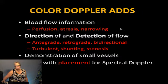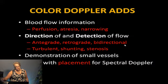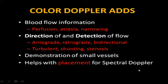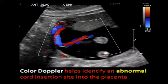What does color Doppler add? It adds blood flow information: perfusion, narrowing or stenosis, direction and detection of flow — antegrade, retrograde, bidirectional — turbulence, and shunting. It helps demonstrate small vessels. Put on the color and decrease your scale to allow more color so you can see flow in smaller vessels, especially venous. Color also helps us know where to place our spectral Doppler gate. When looking for the ductus venosus, turn up color gains and look for the area of turbulence.